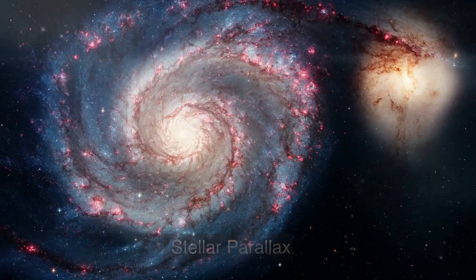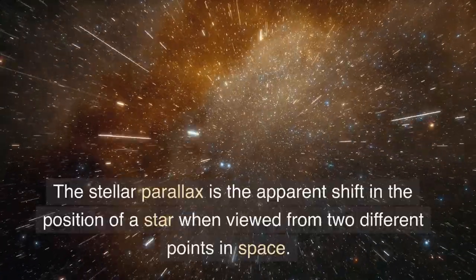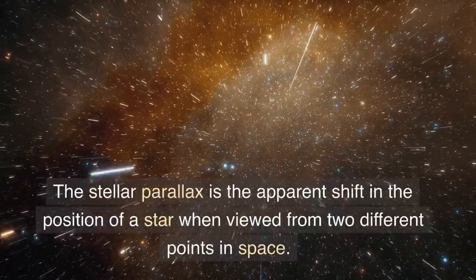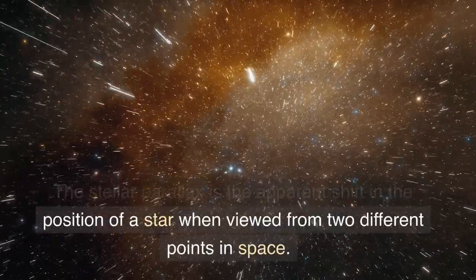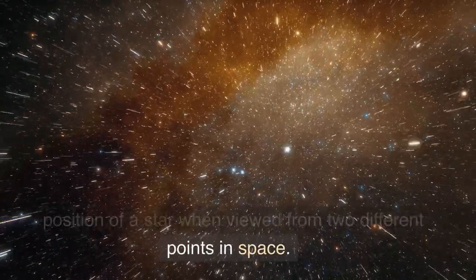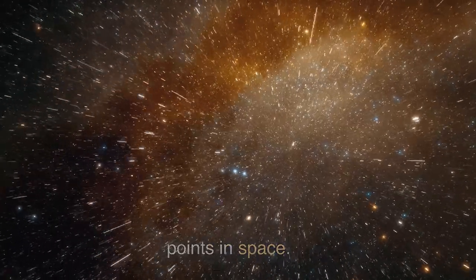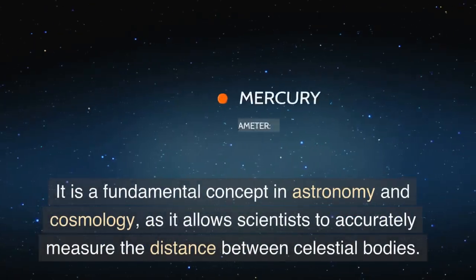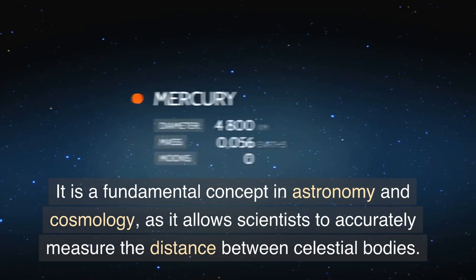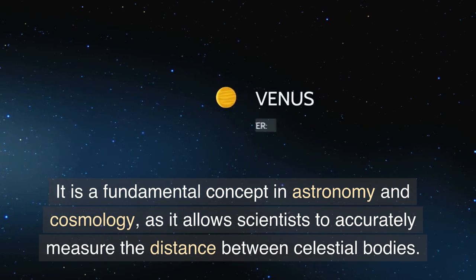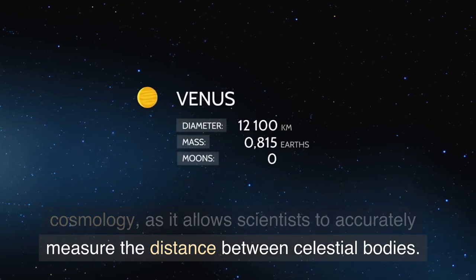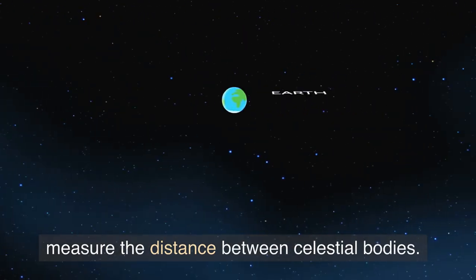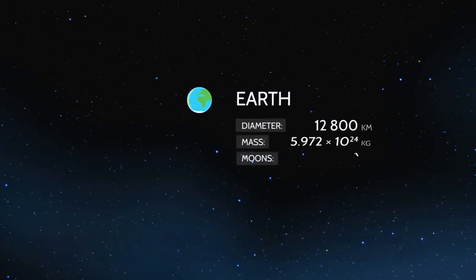Stellar parallax is the apparent shift in the position of a star when viewed from two different points in space. It is a fundamental concept in astronomy and cosmology, as it allows scientists to accurately measure the distance between celestial bodies.